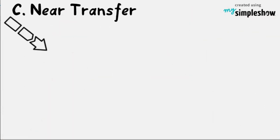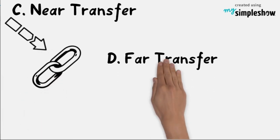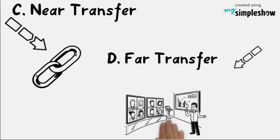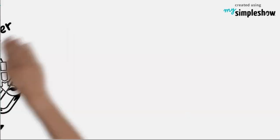Near transfer, referred to as specific transfer, refers to transfer between very similar contexts. Far transfer, also called general transfer, refers to transfer between contexts that on appearance seem remote and alien to one another. That's all and thanks for watching.